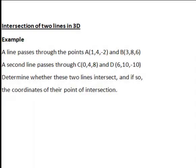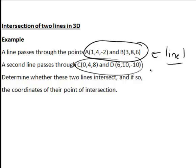In this recording, we look at determining whether two lines in three-dimensional space intersect or not, and if so, where. We're going to consider a line through points A and B as shown, and a second line through points C and D as shown, and see if those two lines intersect. We'll call the line through A and B line 1, and the other one line 2. We should start by getting the vector equations, and hence the scalar parametric equations of each line.